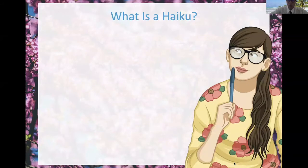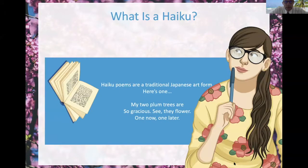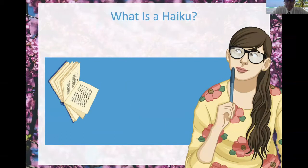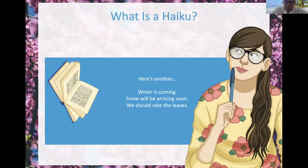What is a haiku? Haiku poems are a traditional Japanese art form. Here's one: 'My two plum trees are so gracious. See they flower. One now, one later.' Here's another one: 'Winter is coming. Snow will be arriving soon. We should rake the leaves.'